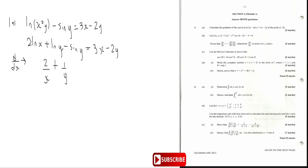Continuing: minus, when you differentiate sin(y) you get cos(y) multiplied by dy/dx, which is y′. That equals: differentiating 3x gives 3, minus differentiating 2y gives 2y′.